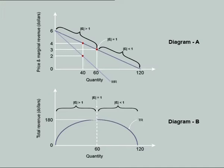When marginal revenue is positive in the diagram — from quantity 0 to 60 — total revenue is rising with a fall in price (diagram A); thus demand is elastic. When marginal revenue is negative at any quantity above 60, total revenue decreases with the price fall; demand here is inelastic. When MR is 0 and total revenue is at its maximum, elasticity is unitary — at quantity 60.